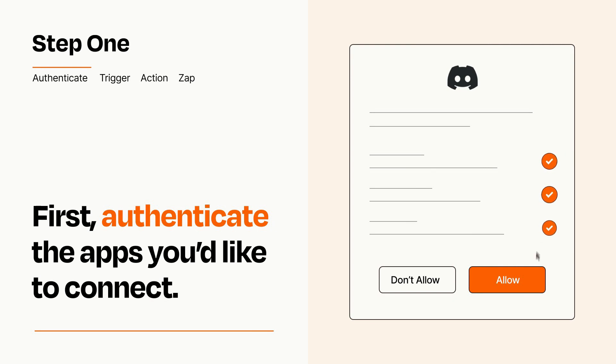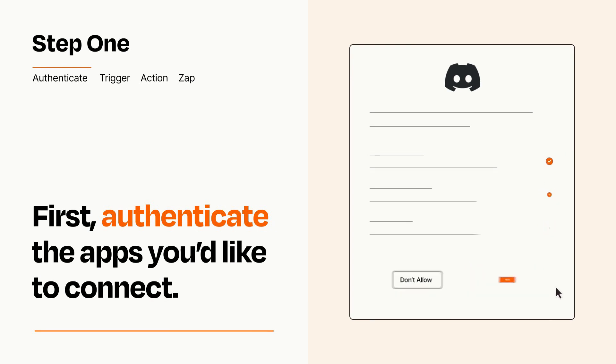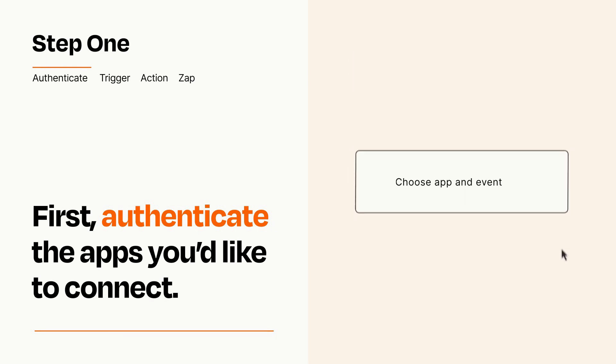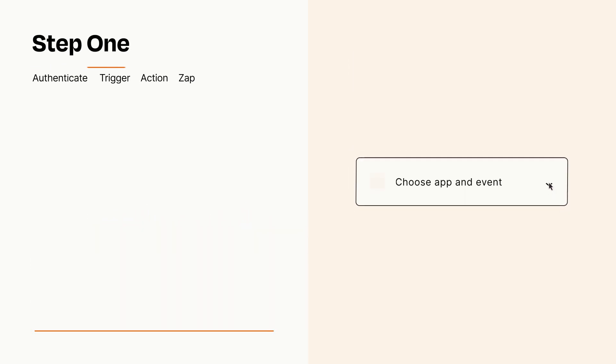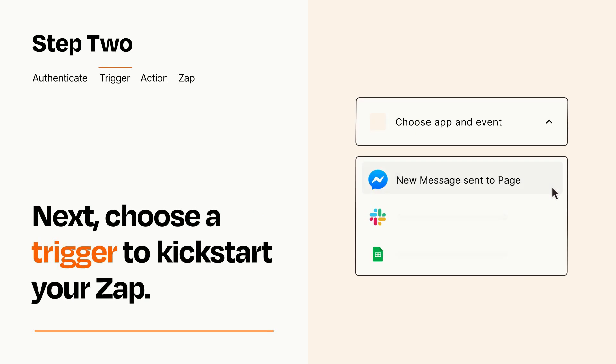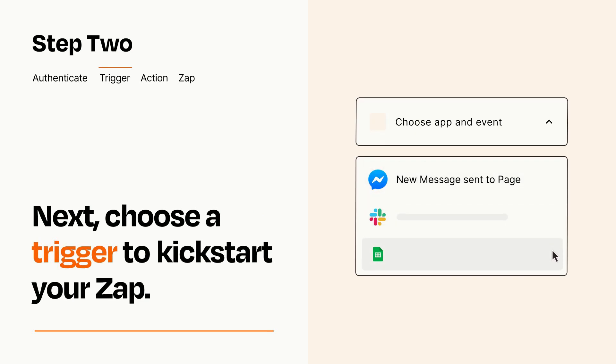Zapier meets industry standards for encryption when connecting with each of your apps. Now let's set up your trigger, which is the event that starts your Zap. Pick the trigger event that you want from the list.